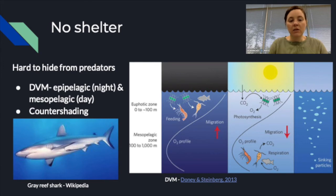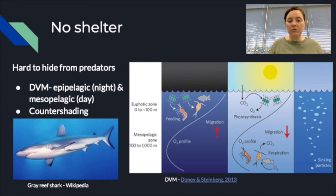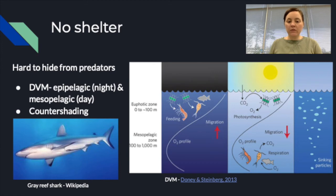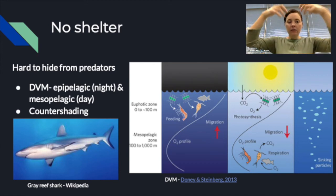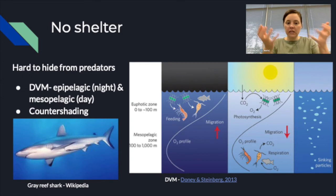Many organisms also use counter shading. Looking down into the ocean means looking toward darkness, so organisms are very dark on top to blend into dark water. Looking up from below, you see sunlight coming through the surface, so organisms are very light colored on the bottom to blend in with that light coming from above.